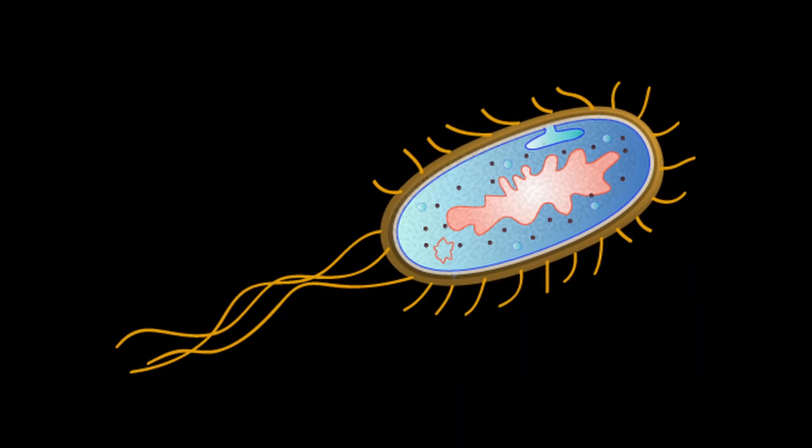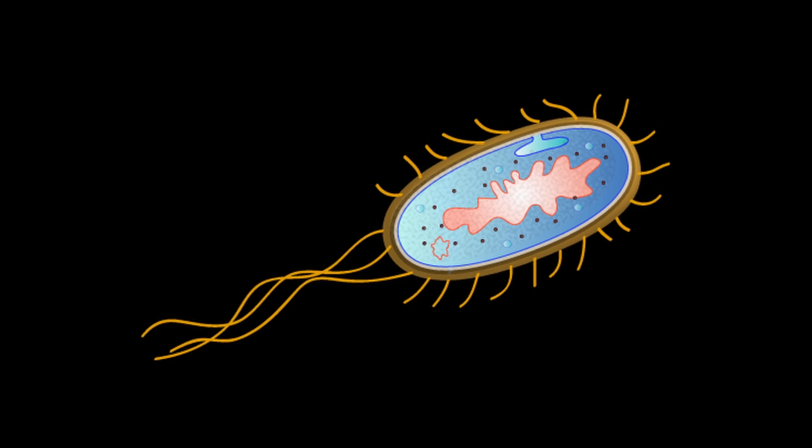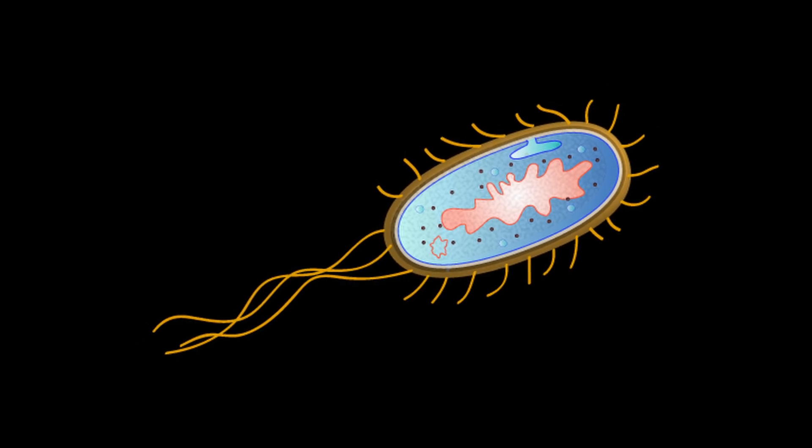UTIs are commonly caused by bacteria. Around 70% of cases are usually caused by a bacteria called Escherichia coli. Something interesting about this bacteria — it's a normal flora in the gut, meaning that you have it normally.